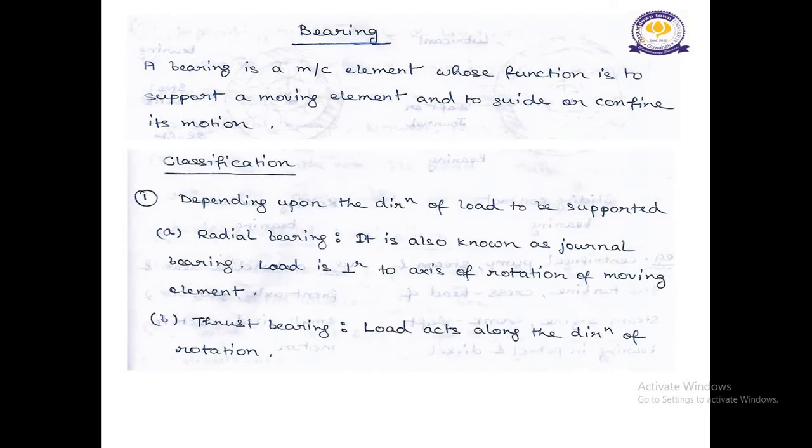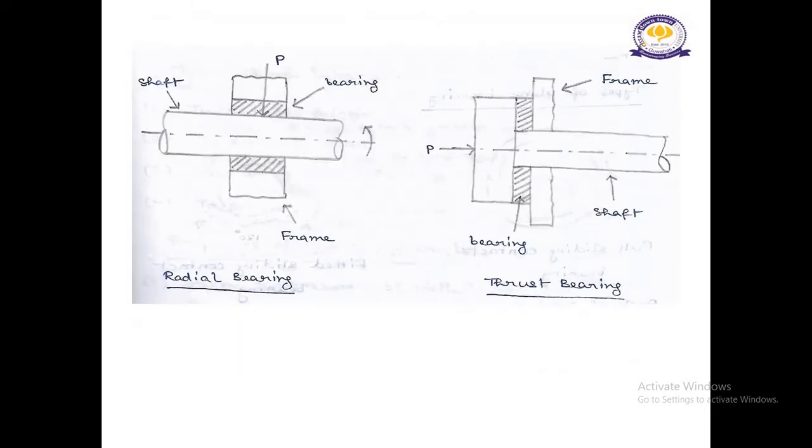There are various classifications of bearing. Number 1 is depending upon the direction of load to be supported. Number A is Radial Bearing. Number B is Thrust Bearing. Now come to the Radial Bearing, it is also known as Journal Bearing. Load is perpendicular to axis of rotation of moving element. And Thrust Bearing, load acts along the direction of rotation. Here you can see a sketch of Radial Bearing and also a sketch of Thrust Bearing.